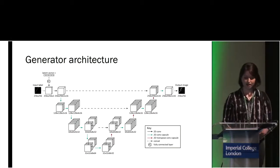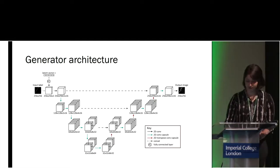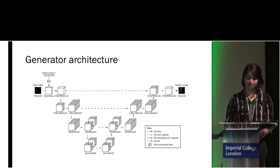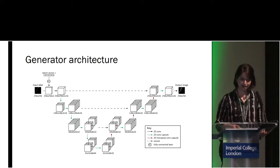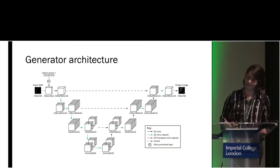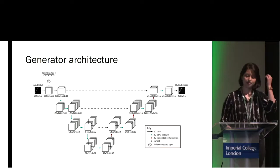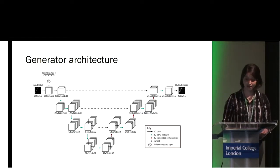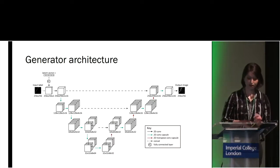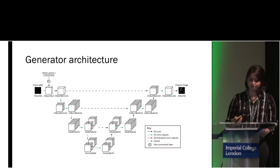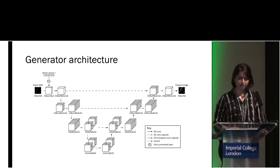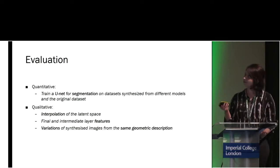Our generator architecture is built to be quite similar to a U-Net. We have skip connections, but there are a few key differences. Since our network is a GAN, we have a latent vector Z that is an input to the network, passes through a fully connected layer and is reshaped to be an additional channel to the input. The role of this latent vector is to control the output image — if we change the latent vector the output image will also change. In addition, each layer in the network is split into blocks of capsules, each with a certain number of channels.